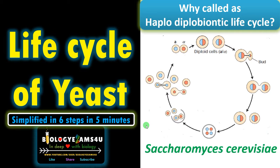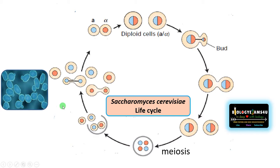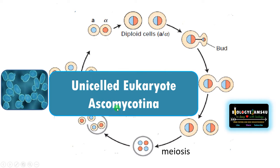In this video, let us understand the life cycle of yeast and why the life cycle is called the haplodiplobiontic life cycle within five minutes. Yeast is a fungus that belongs to ascomycotina, where the spores are formed inside a sac called ascus.